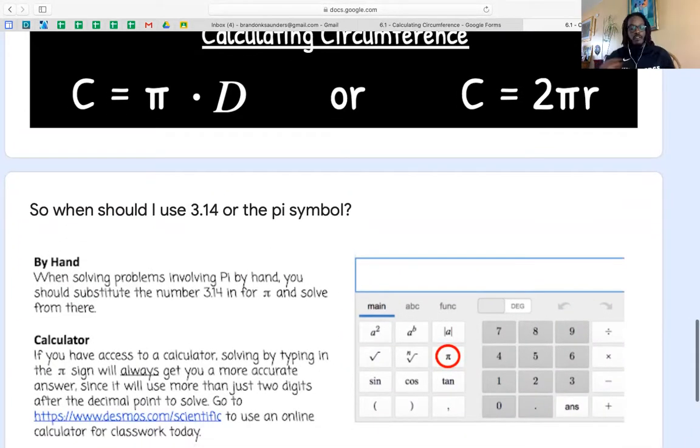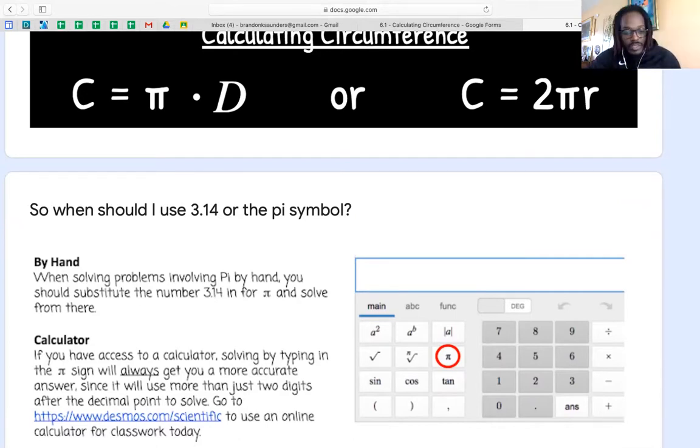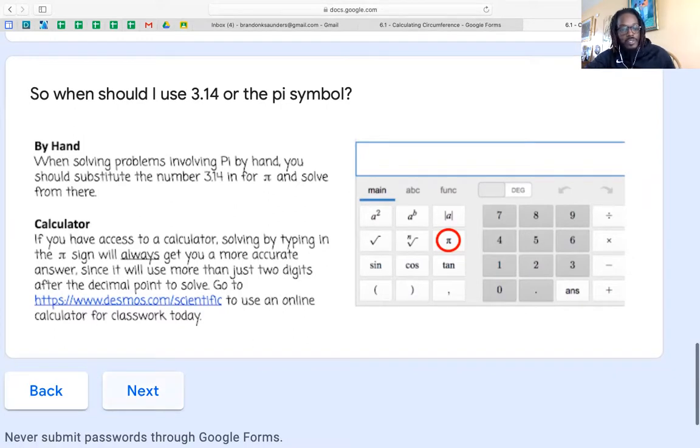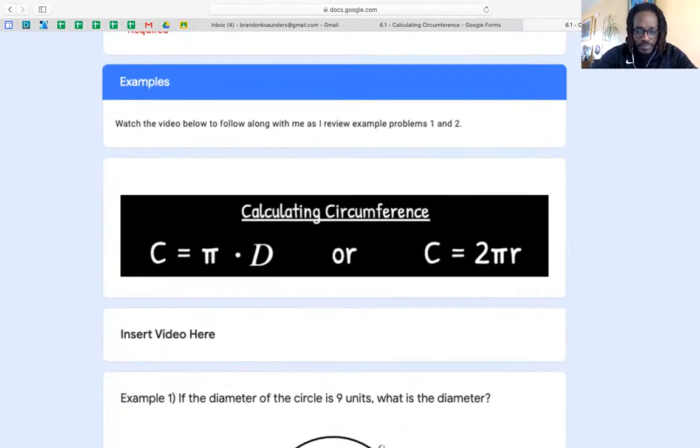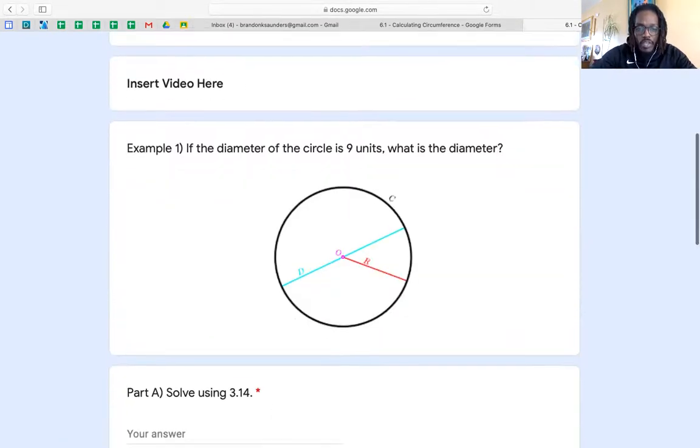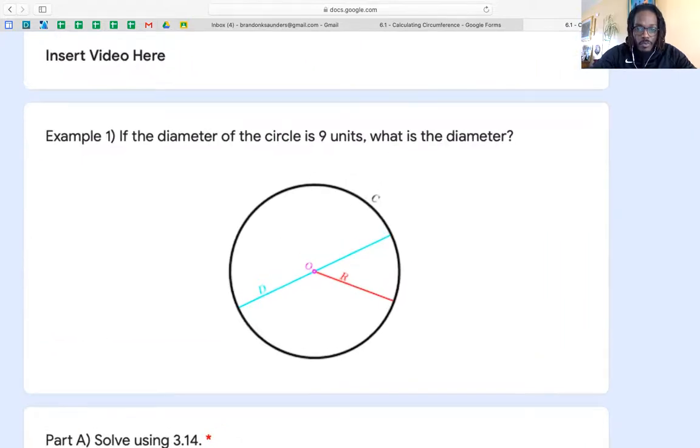So when we're solving by hand, we can substitute 3.14 for pi. When we're using a calculator, we can just multiply times pi and get the most accurate answer that we could possibly get. We can still round those. In there is a scientific calculator. A lot of you all can use it using your phone.